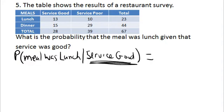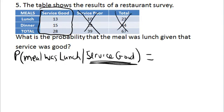Since we were given the service is good, that tells us that our reduced sample space is simply this first column. We could care less about anything else because we know that the service was good. Given that, we want to know what the probability is that the meal was lunch.